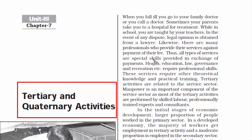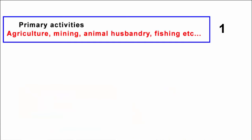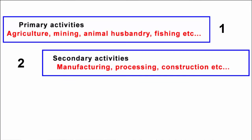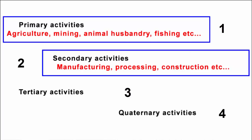Tertiary means third phase. The first phase of any nation's economy is always primary activities like agriculture, mining, animal husbandry, fishing, etc. The second phase is industries like manufacturing, processing, and construction, which we call secondary activities. After that, we have tertiary. And quaternary is the next phase after tertiary — that is the fourth phase.